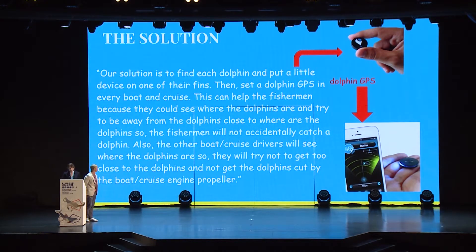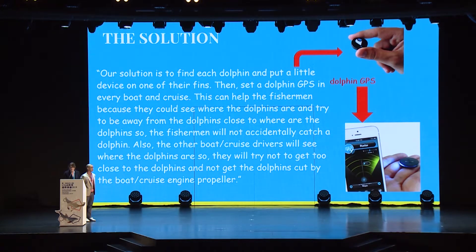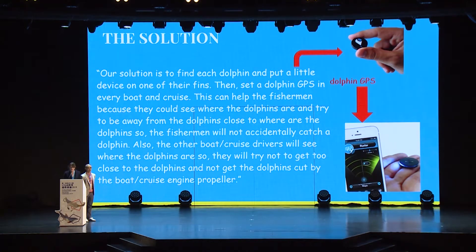Here are some examples of solutions the children came up with. In one solution, a GPS tracking device was to be fitted to all dolphins so that boats could avoid them. The presentation of solutions allowed evaluation of their own and others' ideas, as the student audience asked questions and probed deeper. For this particular presentation, students asked: how will you attach it, and how will you catch the dolphins? The students were often the toughest critics, having just investigated the same issue themselves.